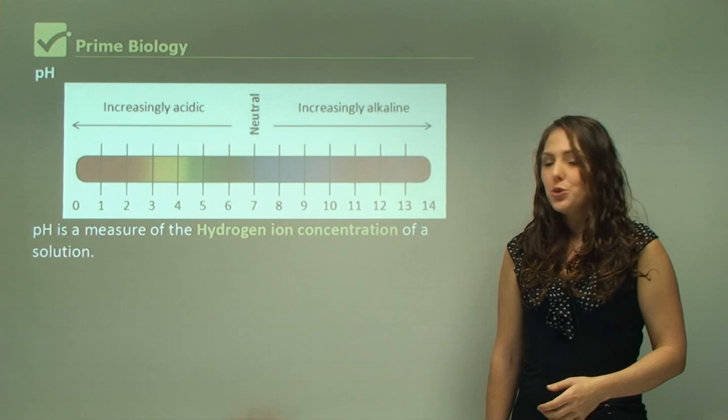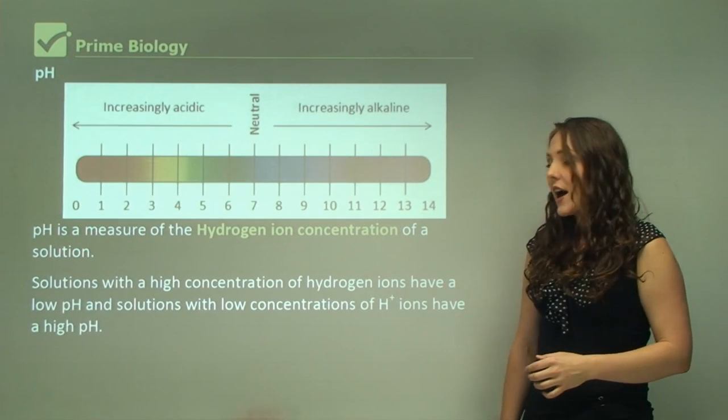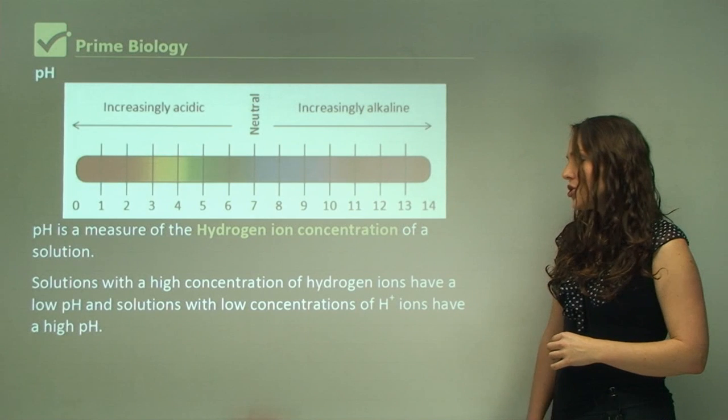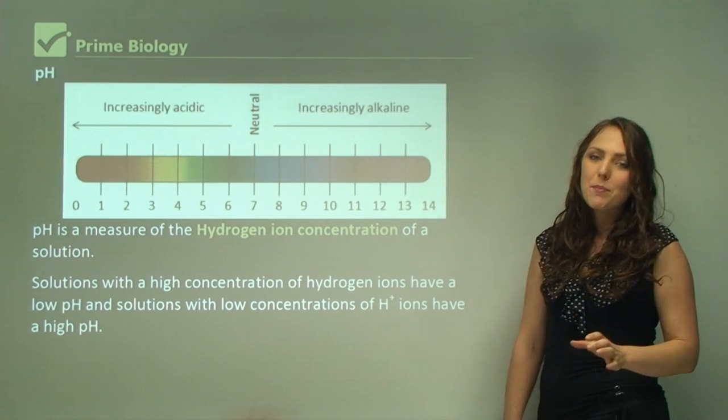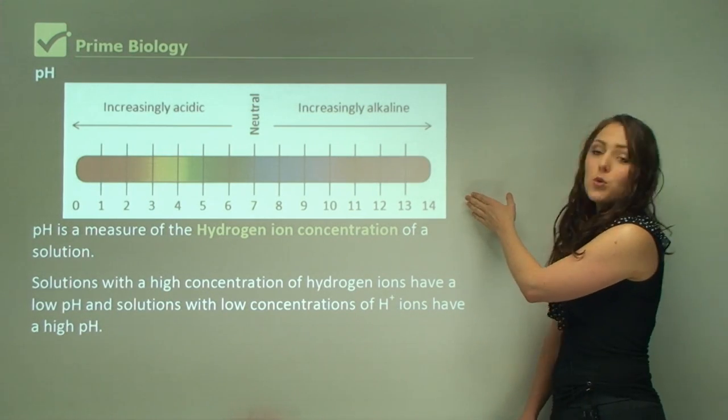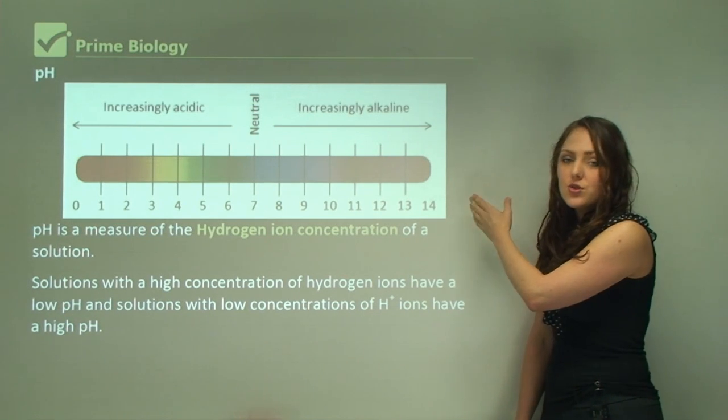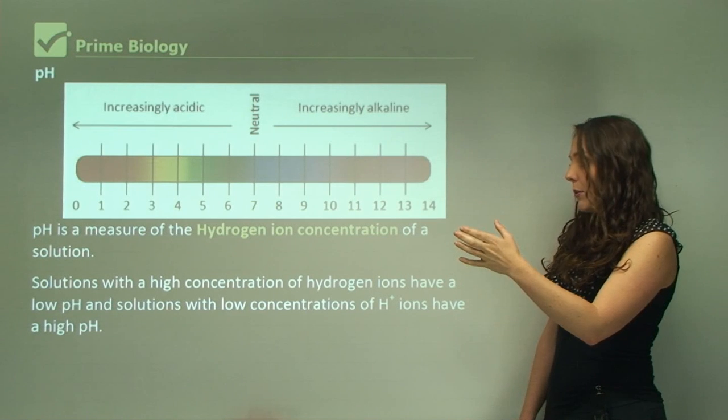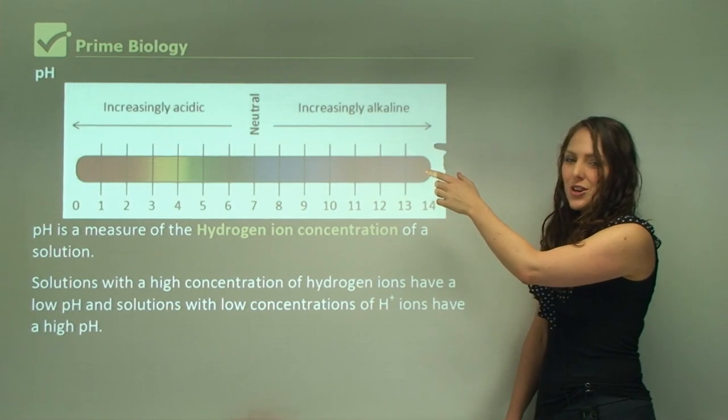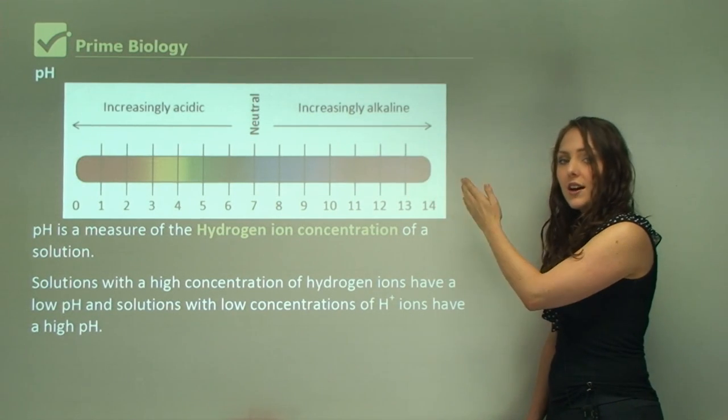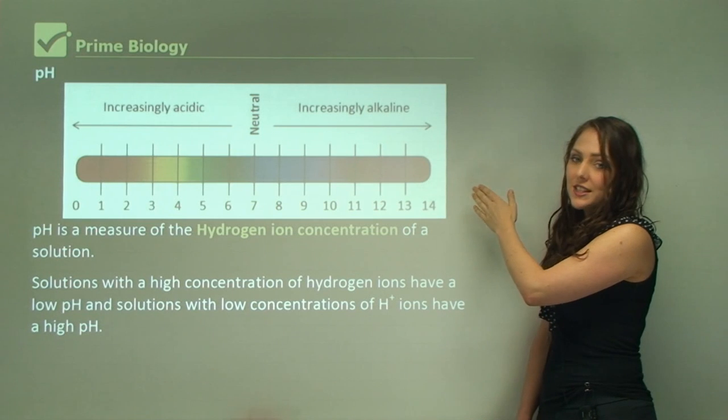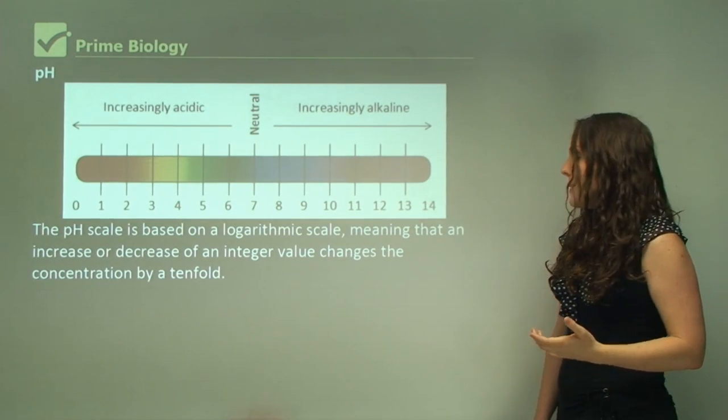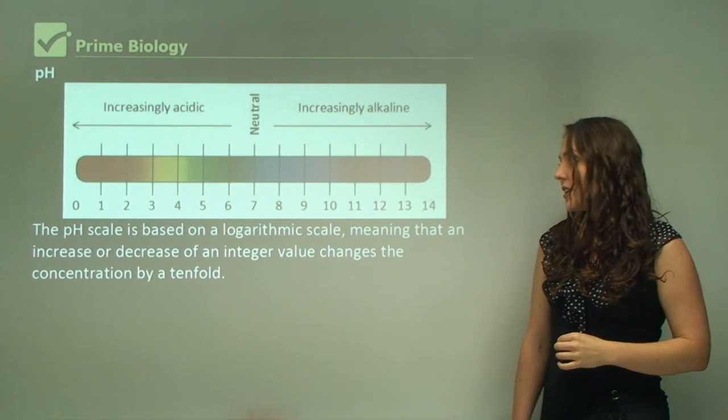pH is the measure of hydrogen ions in a solution. Solutions with a high concentration of hydrogen ions have a low pH, and solutions with low concentrations of hydrogen ions have a high pH. Going towards 14 they're lower in hydrogen ion concentrations, and more towards 0 they're higher in hydrogen ion concentrations.